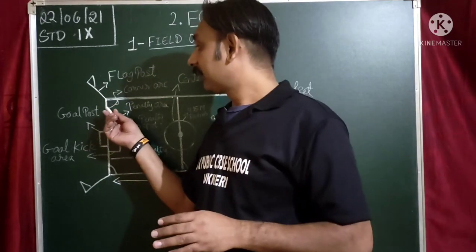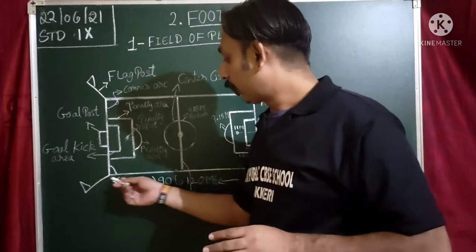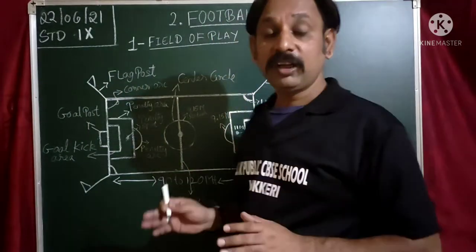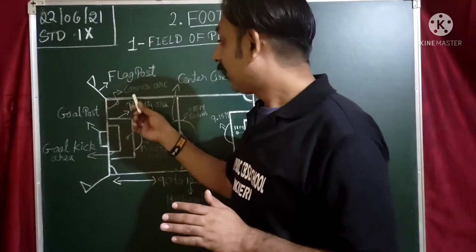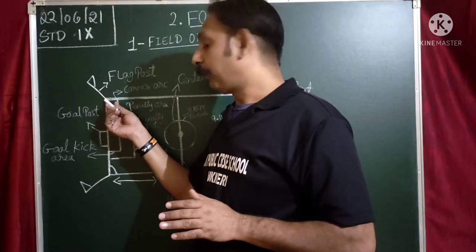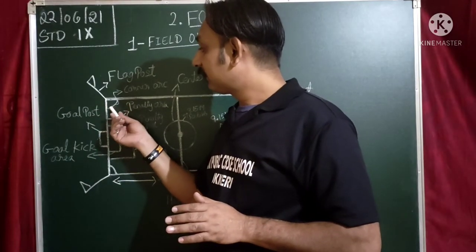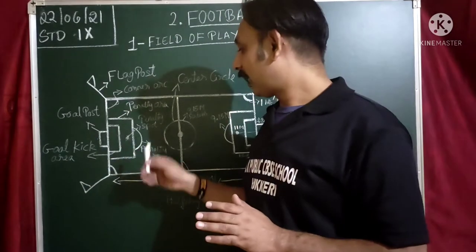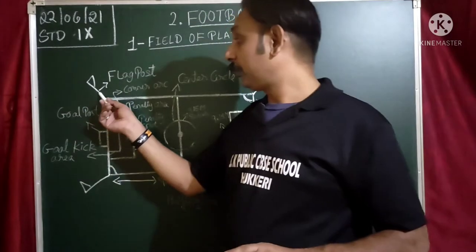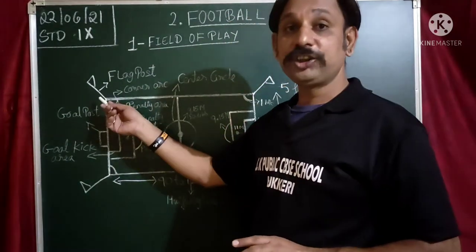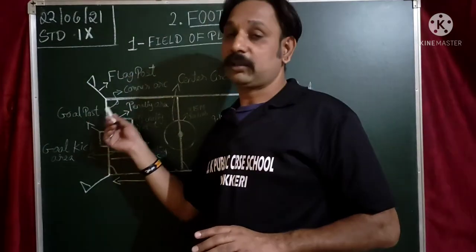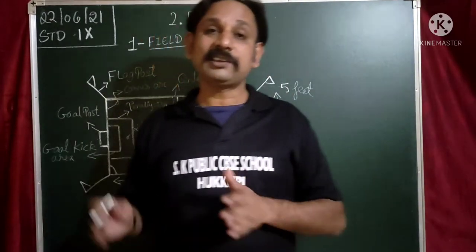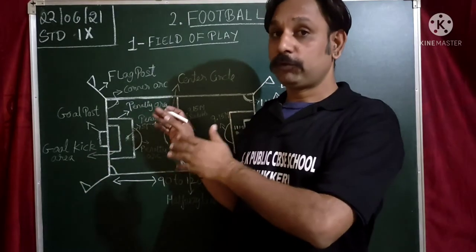At all four corners of the ground, we have a flag post. From each flag post, there is an arc opposite to it, known as the corner arc. So there are four flag posts — one at each corner — and four corner arcs. These are the parts of the football field.